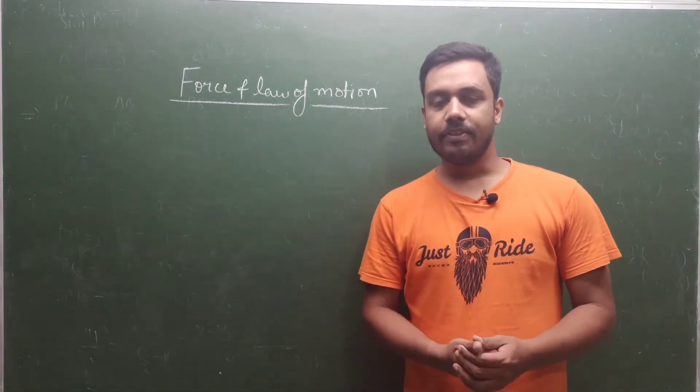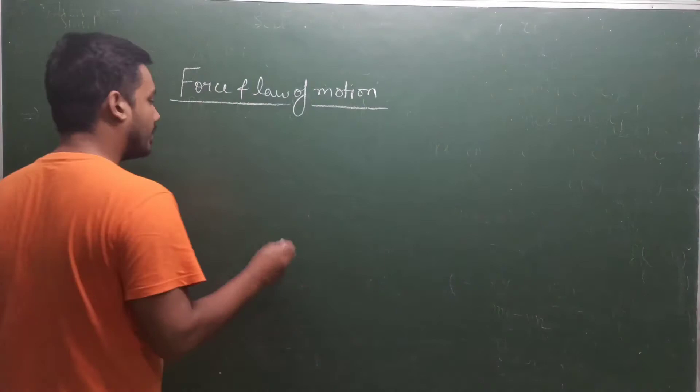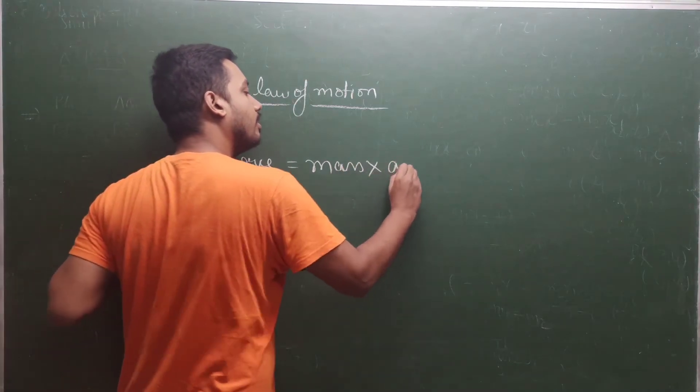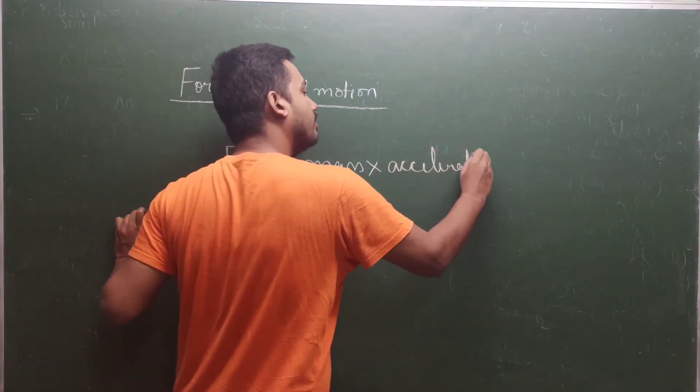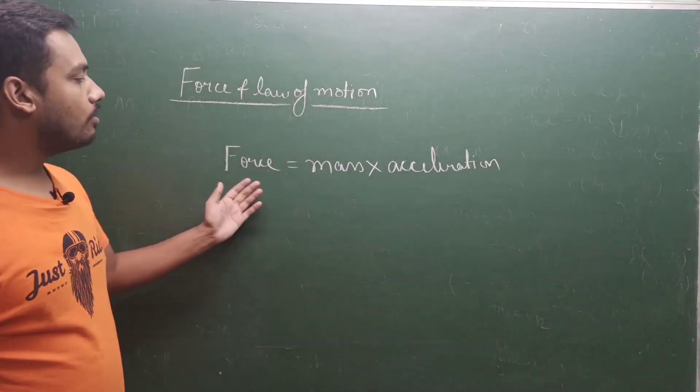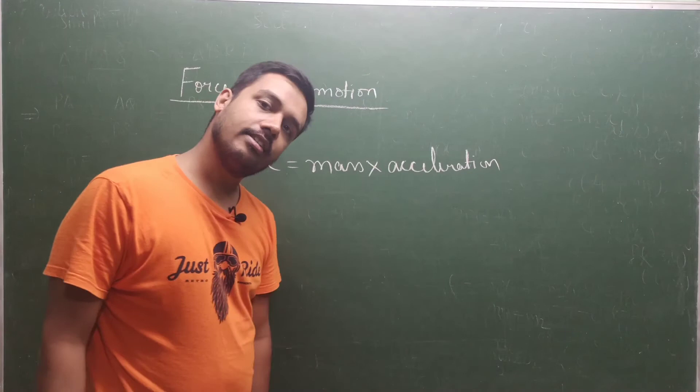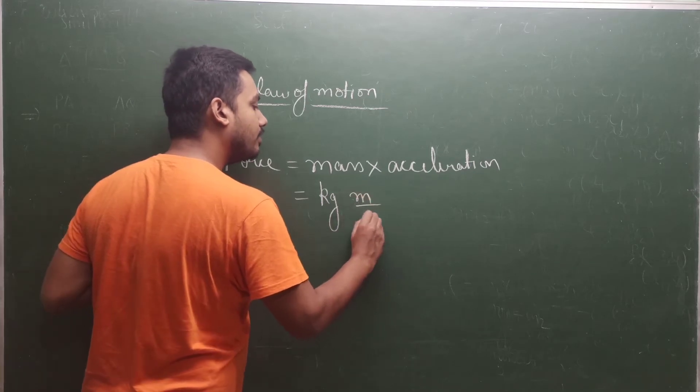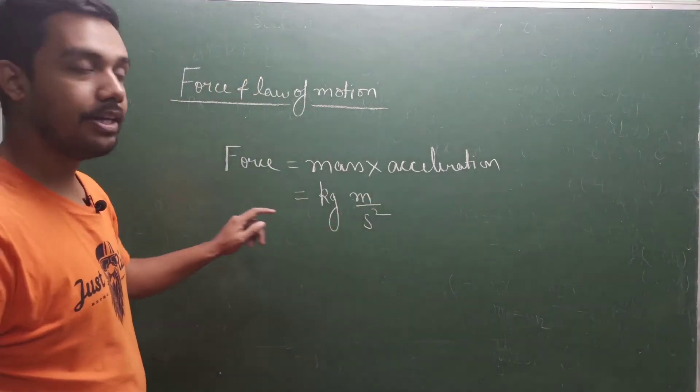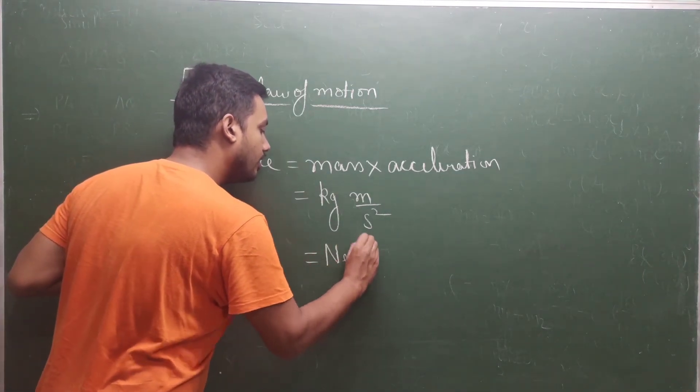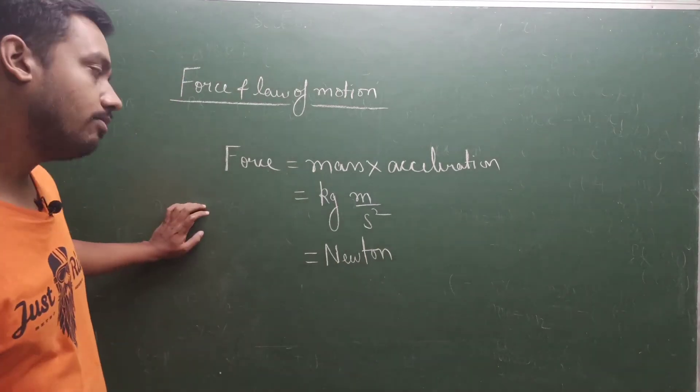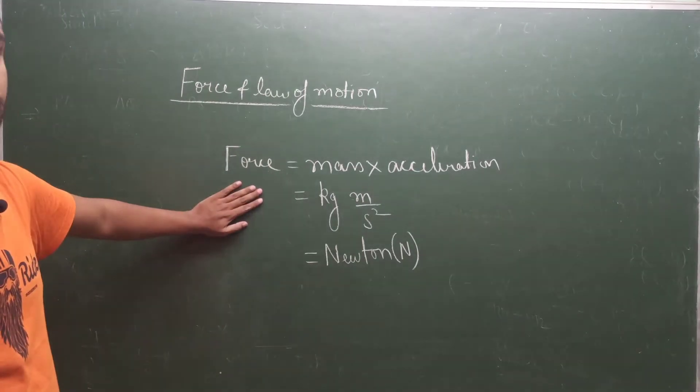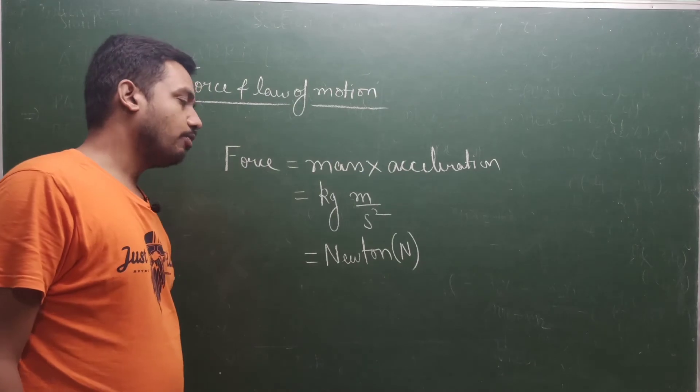Now we will read the definition of force. What is the formula of force? Mass into acceleration. The formula of force is mass into acceleration. Force is defined as the product of mass and acceleration. Unit of mass is kilogram. Unit of acceleration is meter per second square. And this kg meter per second square is called Newton, denoted by capital N. The SI unit of force is Newton.